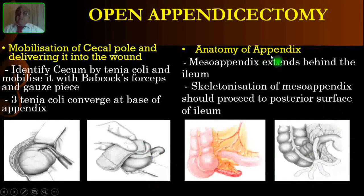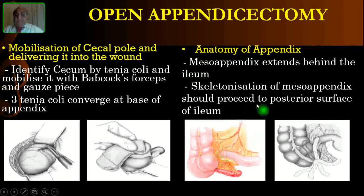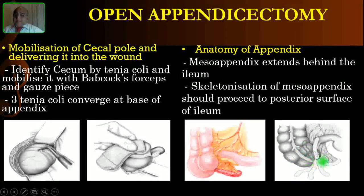Before going further, let us review a few points in the anatomy of the appendix. The appendix is attached to the base of the cecum where the three tenia coli converge. The blood supply to the appendix is through the mesoappendix — the appendicular artery, which is a branch of the ileocolic artery, which in turn is a branch of the superior mesenteric artery. The appendix can lie in various positions like a clock face: 12 o'clock, 1 o'clock, or any position. It may be pre-ileal, post-ileal, pelvic, paracaecal, or retrocaecal. The tip position is variable, but the base is always constant at the confluence of the three tenia coli.